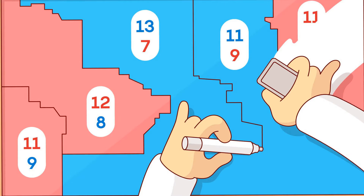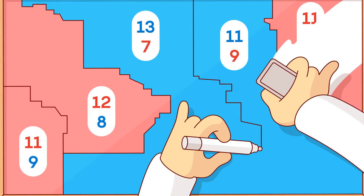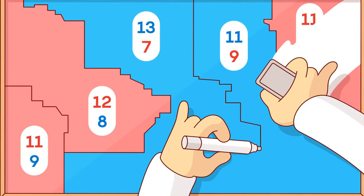Start by imagining a state with 200 voters, of whom 100 are loyal to Party A and 100 to Party B. The state needs to elect 4 representatives and so must create 4 districts of equal electoral size. If you favor Party A, you might distribute the 100 A voters and 100 B voters into the 4 districts such that Party A wins 3 of the 4 elections.